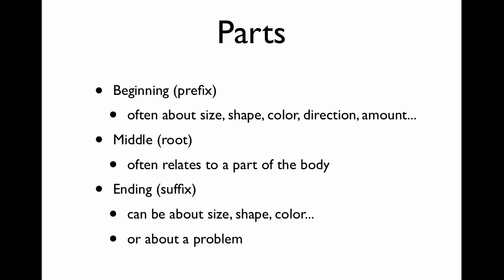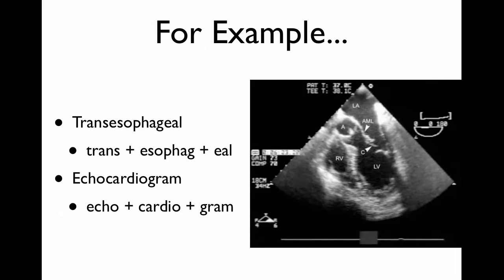First thing to understand is that you've got to break words down into their component parts. Most medical and science terms will have a beginning, which we call a prefix, a middle, which is the root of the word, and then an ending, which is the suffix. Usually the prefix and/or the suffix is a modifier of the main root of the word. Medical terms are really long, and it's very daunting for a lot of people. But the truth is most of them are very descriptive and they mean something — if you can break them down, it's not going to be too bad.